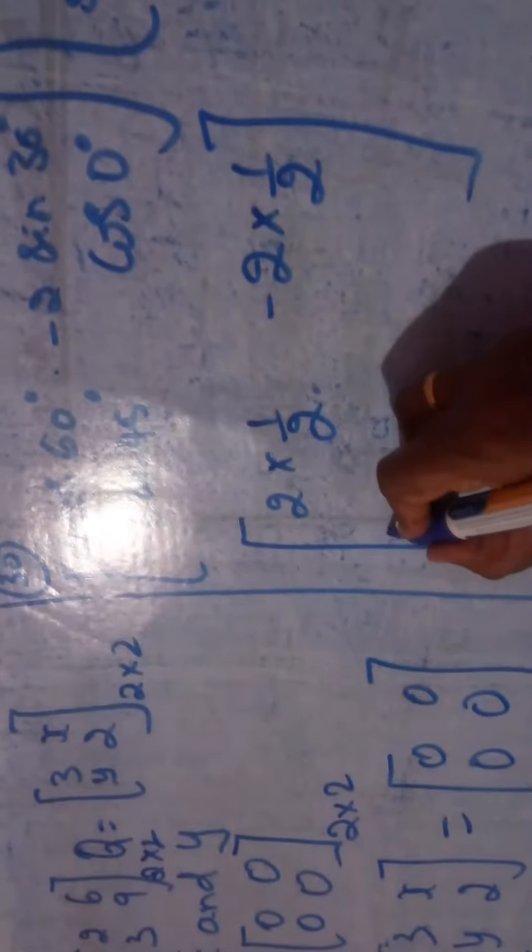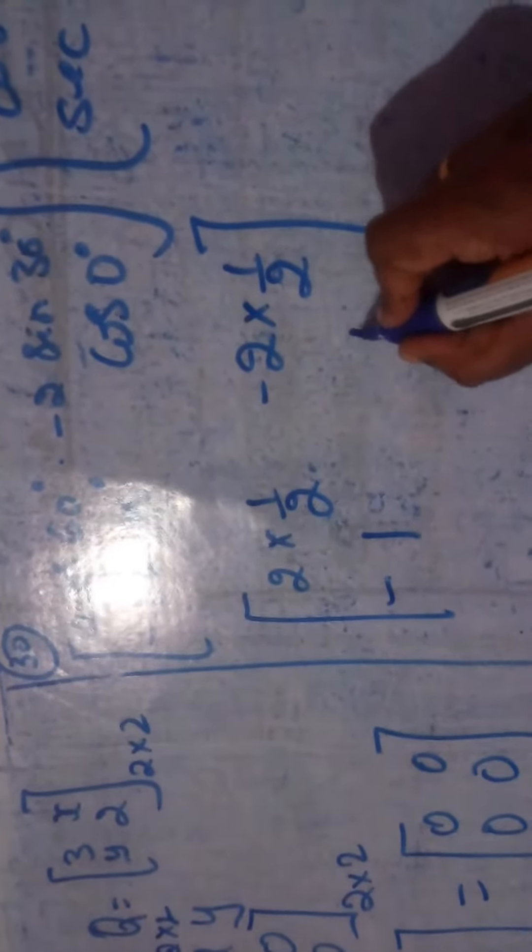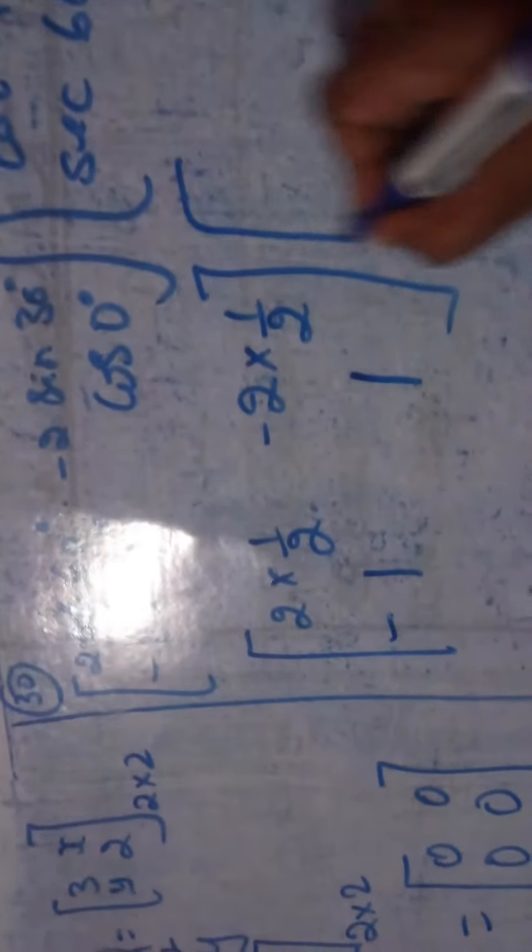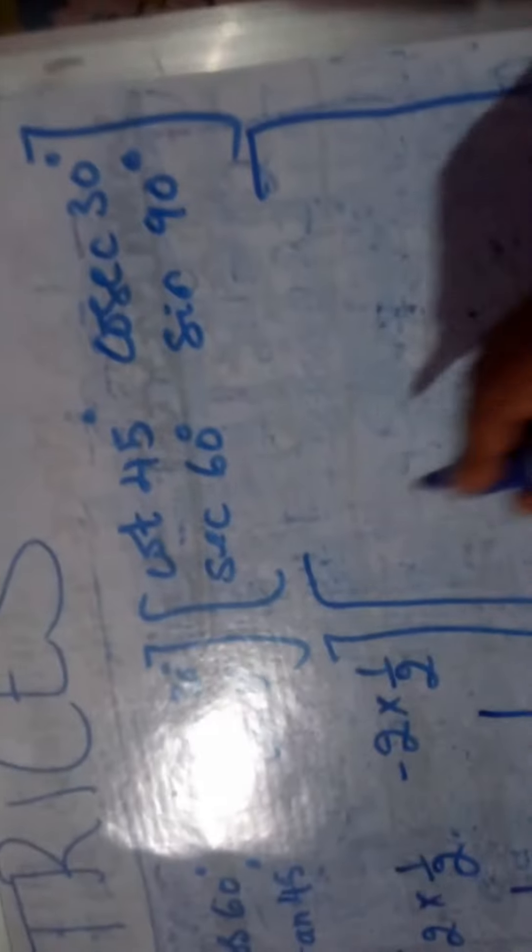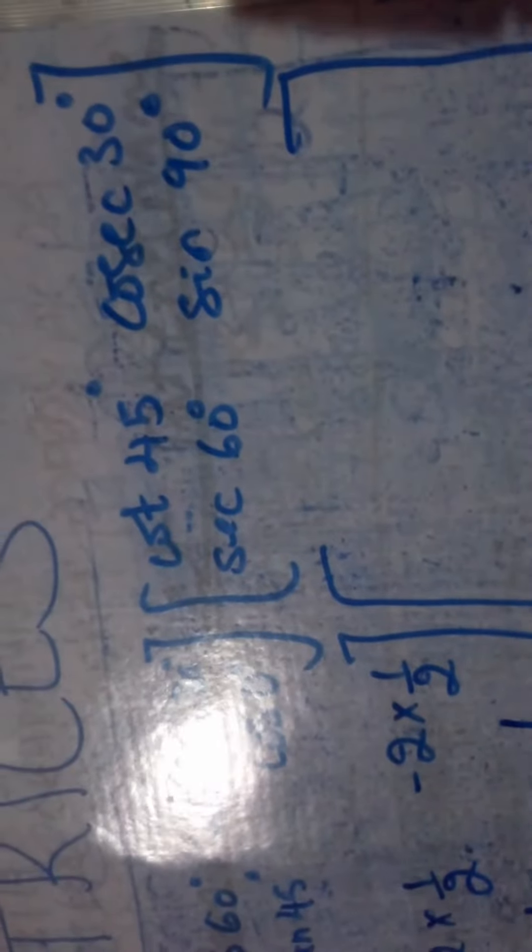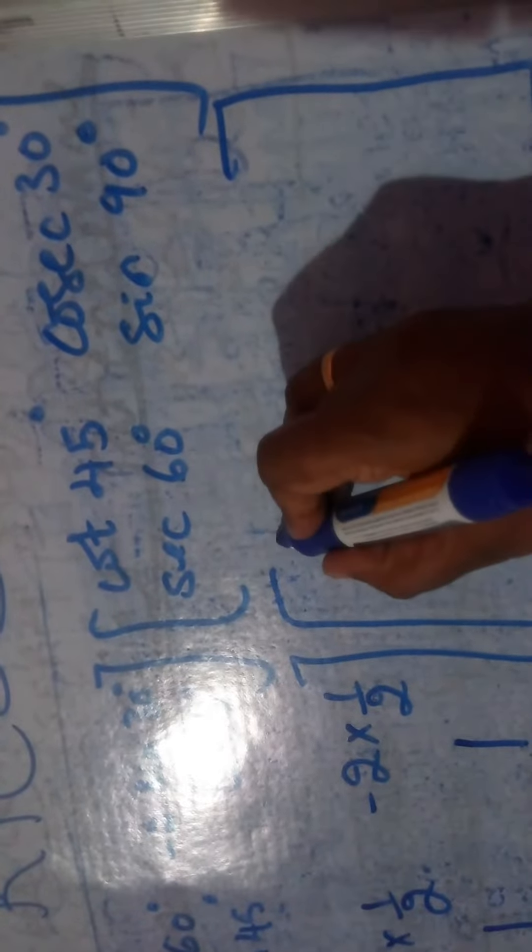Minus tan 45 is 1. Cos 0 is 1. You should remember these values, please take your ninth standard book and try to recollect them. Cot 45 is 1. Cosecant 30 is 2.